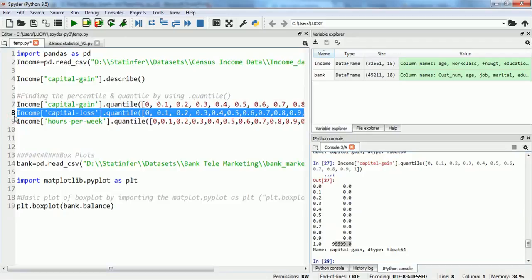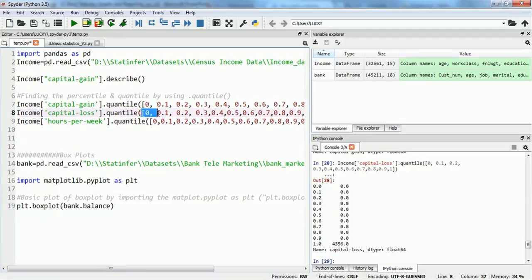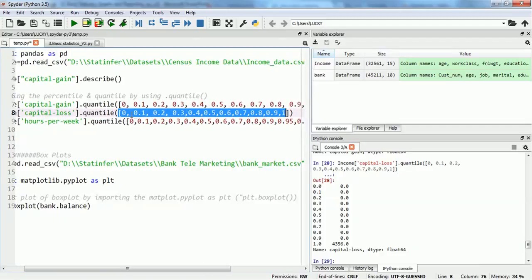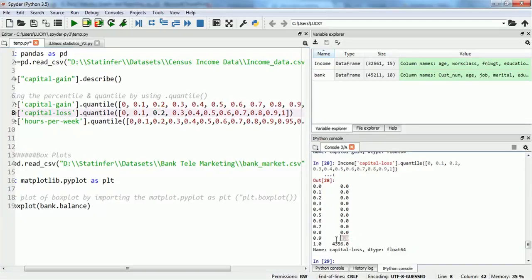So if we try to find the quantile distribution of another column, capital_loss, we can again use the quantile. And in the parentheses, we can pass the list of the quantile values, which is 0, 0.1, 0.2. Zero will give us the 0 percentile and 0.1 will give us the 10th percentile, 0.2 will give us 20th percentile and so on. So for capital_loss also we see that 90% values are below zero and only last 10% values are accumulating 43,566 value.